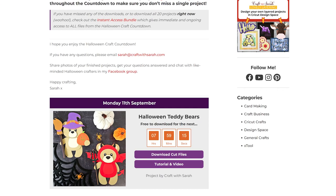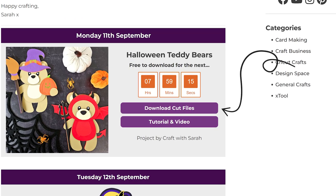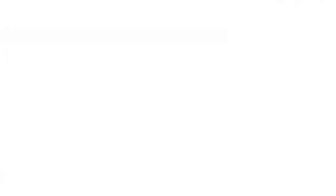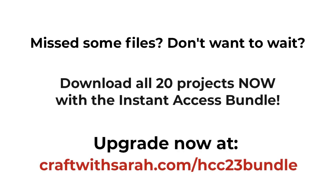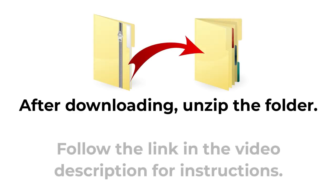Scroll down the page to find today's project and click the button to start the files automatically downloading to your computer or mobile device. Each download is only available for free for 24 hours after it goes live. If you've missed some, check out the instant access bundle at craftwithsarah.com/hcc23bundle which gives immediate and ongoing access to all the files plus loads of extra bonus designs. All downloads come in zip folders — you will need to unzip them before you can upload the files into Cricut Design Space.